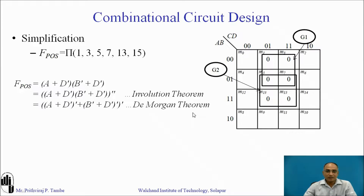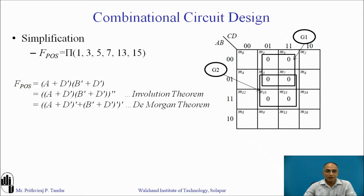Now we apply De Morgan's theorem. The expression becomes ((A + D̄)̄ + (B̄ + D̄)̄)̄. Here you can see how many NOR gates are needed. The first NOR gate has inputs A and D̄; the second NOR gate has inputs B̄ and D̄; and both outputs are applied to a third NOR gate. So three NOR gates are required for the implementation.